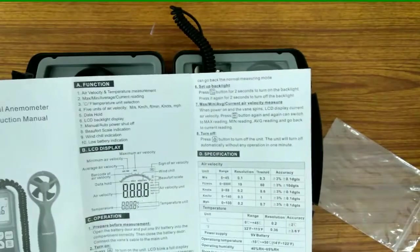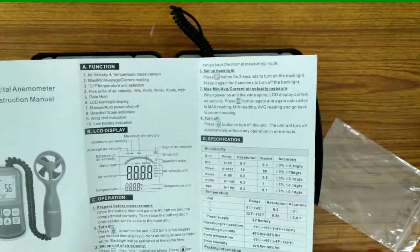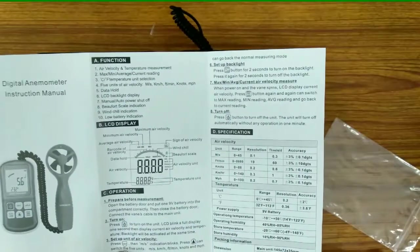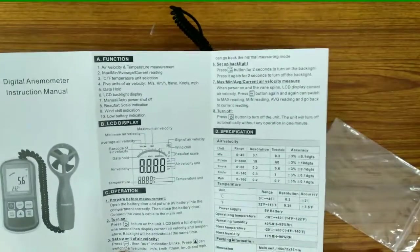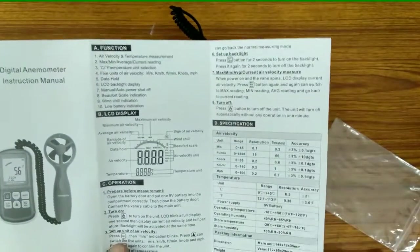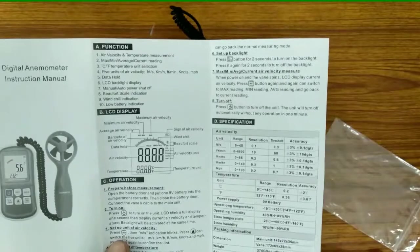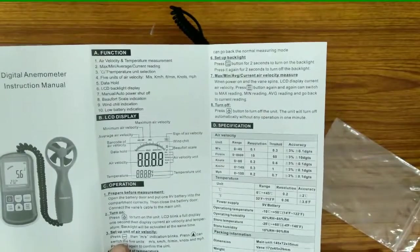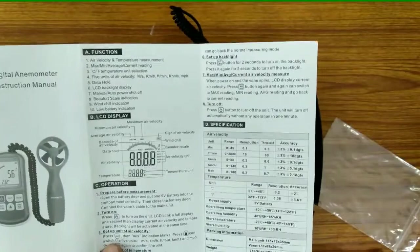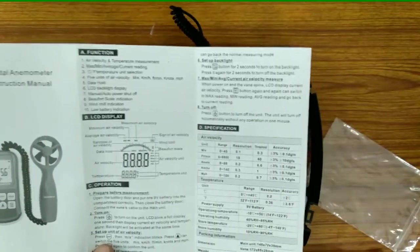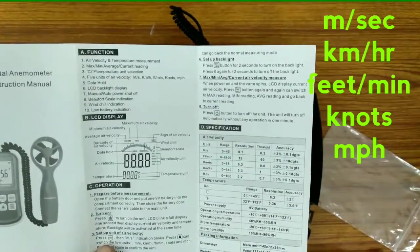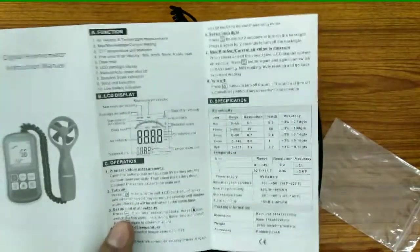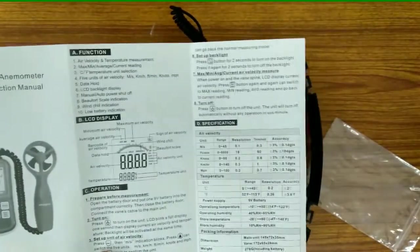The functions are given in the manual: air velocity and temperature measurement, maximum, minimum, and average. Current reading is there. Degree centigrade and Fahrenheit temperature selection is available. There are 5 units for air velocity: meter per second, knots, feet per minute, kilometer per hour, and miles per hour.